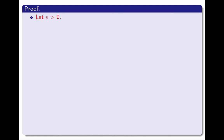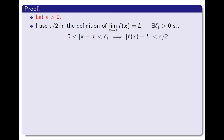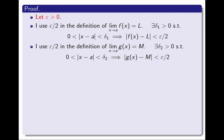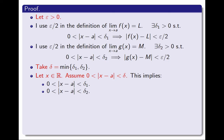First, I fix an arbitrary positive value of epsilon. Then I use epsilon over 2 in the definition of the limit of f is l, and I conclude that there exists a number delta 1, such that if the distance between x and a is between 0 and delta 1, then the distance between f and l is less than ε over 2. I do exactly the same thing with the definition of the limit of g, and I get a second value delta 2 that works for g. Now that I have delta 1 and delta 2, I take delta to be the minimum of both — this is also a positive number. Next, if I fix a real number x and assume the distance between x and a is between 0 and delta, then I can also conclude it is between 0 and delta 1 and between 0 and delta 2. The first guarantees the distance between f and l is less than ε over 2, and the second guarantees the distance between g and m is less than ε over 2.